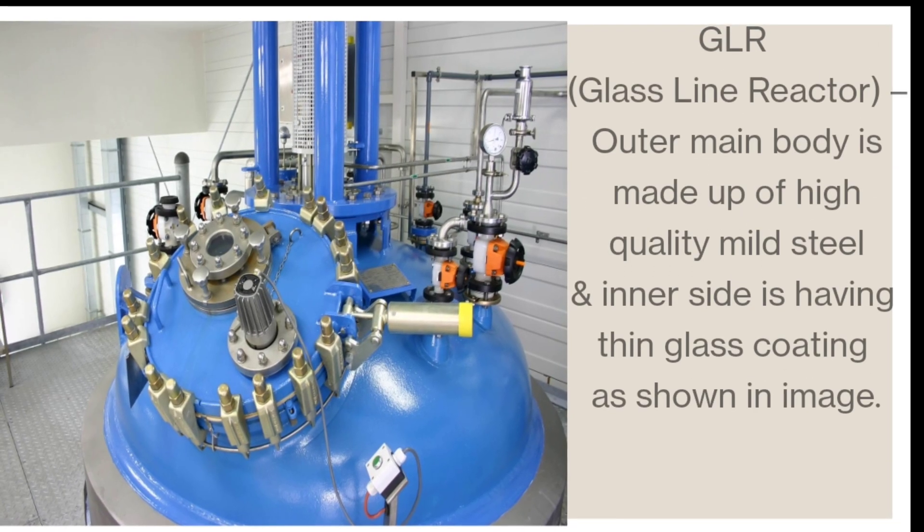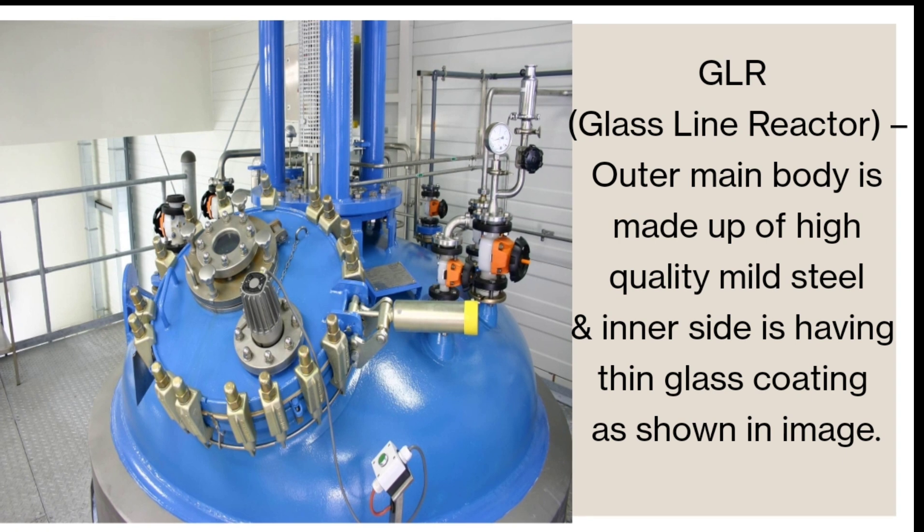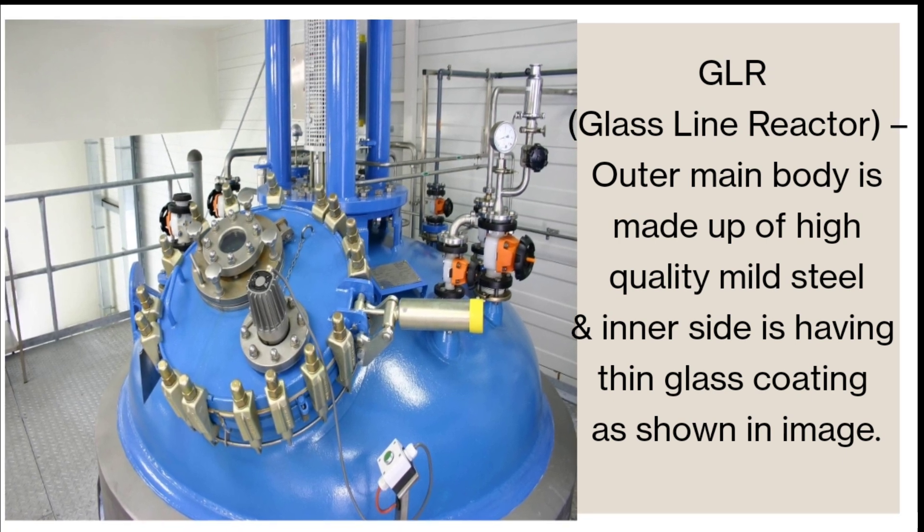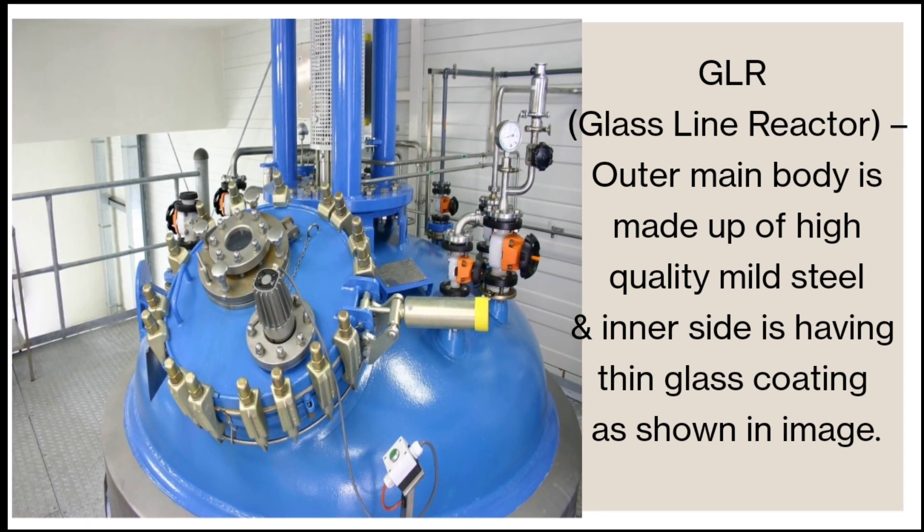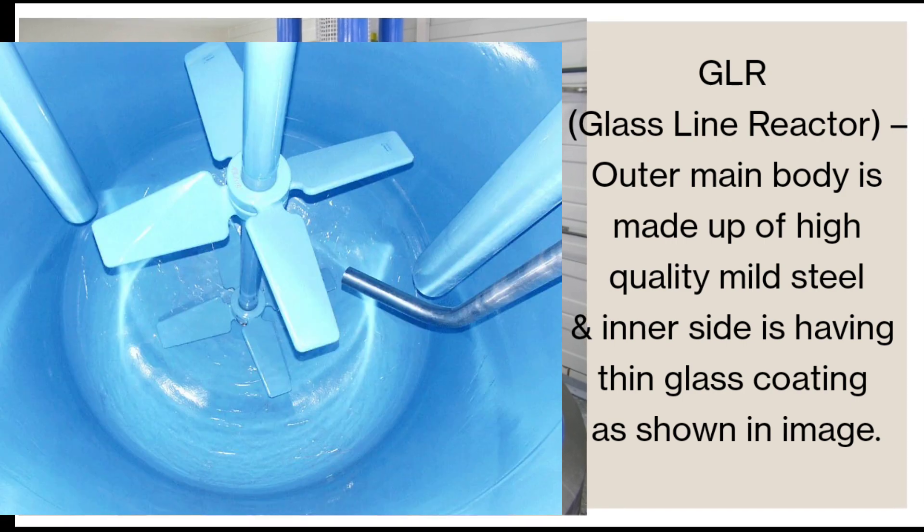Glass Line Reactor: outer main body is made up of high-quality mild steel and inner side is having thin glass coating as shown in below image.